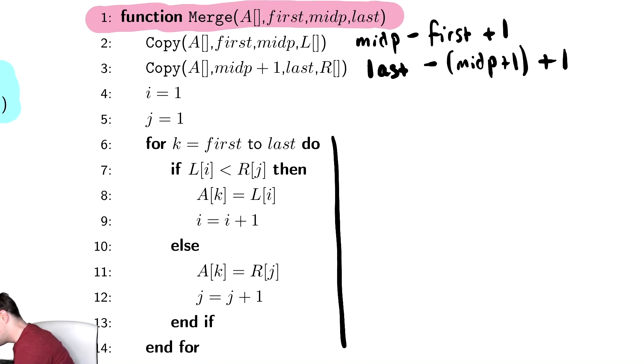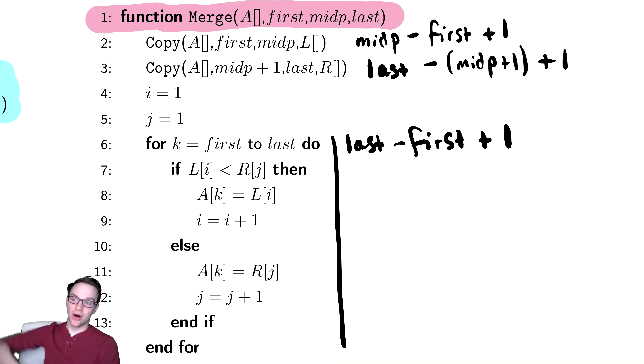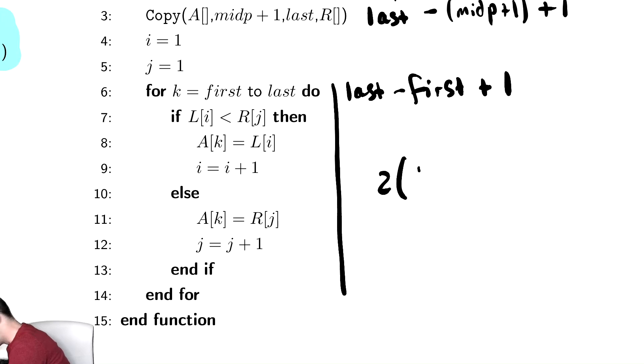Similarly, the loop down here is last minus first plus one iterations. If we were to add all this up, a bunch of things cancel. The total time here is actually two times last minus first plus one because both algorithms run over the entire array from first to last. So it runs over it twice. Therefore, every single operation takes constant time, so the runtime for this method will be two times last minus first times c.